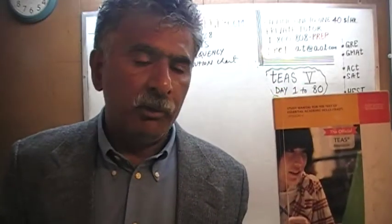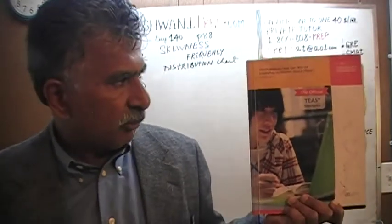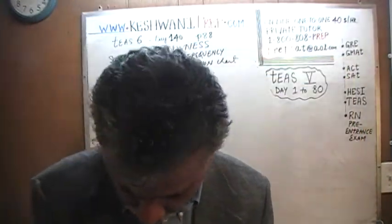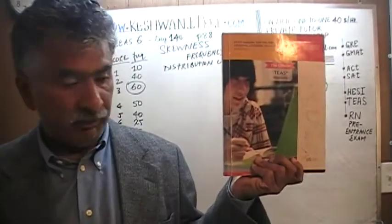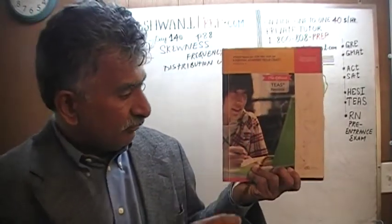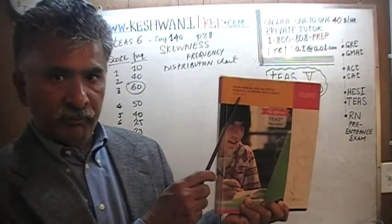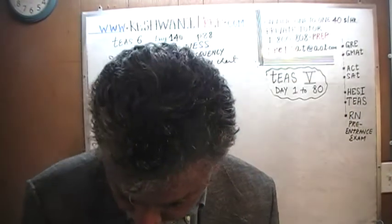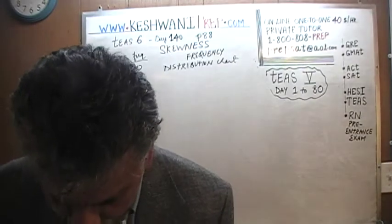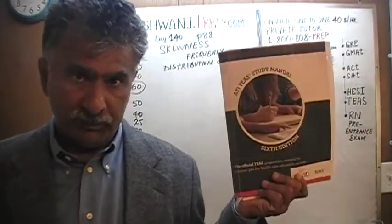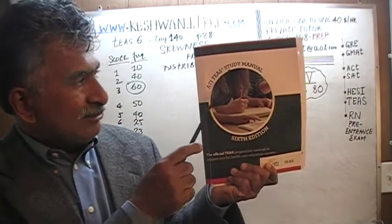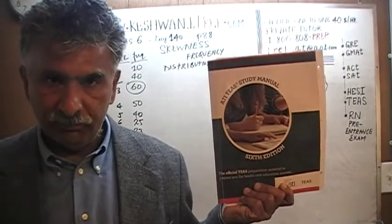We are here because we want to prepare for the TEAS. We have been solving math problems out of this book — or rather, I was holding the wrong book by mistake; that's the 5th edition, the old edition. It should say somewhere on it — right here, version 5. We have been solving math problems out of the 6th edition, the ATI TEAS Study Manual, the 6th edition. If you do not own this book already, purchase it immediately. You're going to need it.